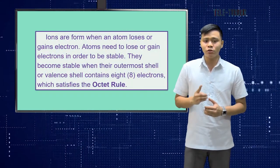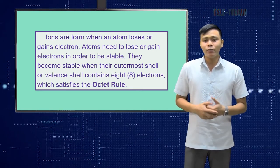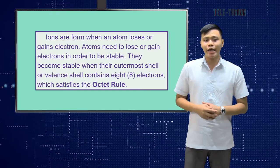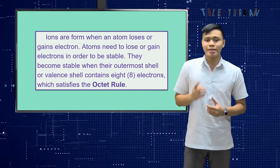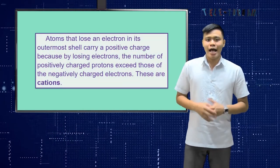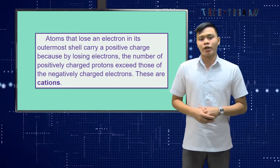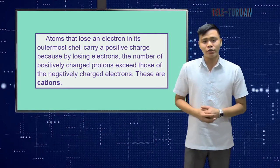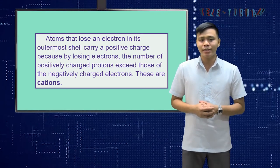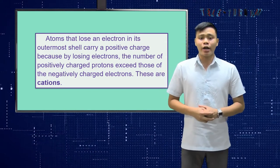Atoms need to lose or gain electrons in order to be stable. They become stable when their outermost shell contains 8 electrons, which satisfies the octet rule. Atoms that lose an electron in their outermost shell carry a positive charge, because by losing electrons, the number of positively charged protons exceeds those of the negatively charged electrons. These are cations.